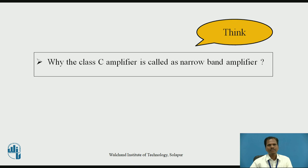Students can pause the video here and think over this question: Why is the Class C amplifier called a narrow band amplifier? The answer is that Class C amplifier is used in a tuned circuit. When the Class C amplifier is tuned to the fundamental frequency of the signal under amplification, it amplifies a small band of frequency around the resonant frequency. That is why the Class C amplifier is also known as a narrow band amplifier.